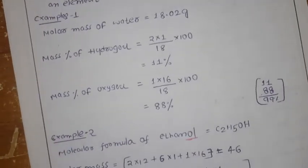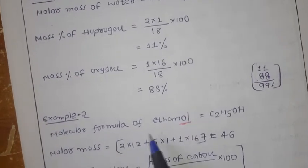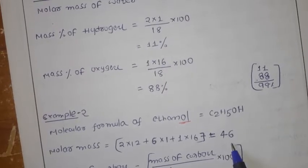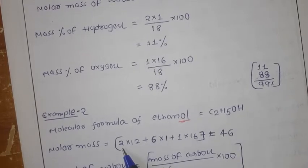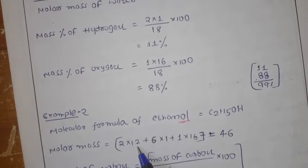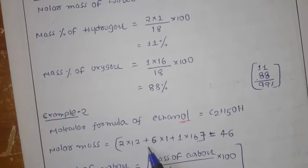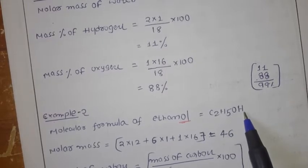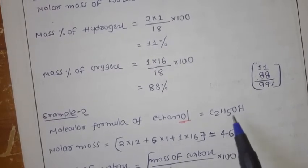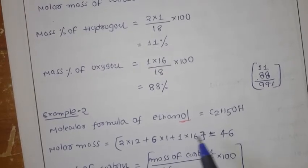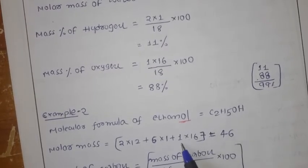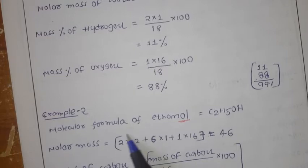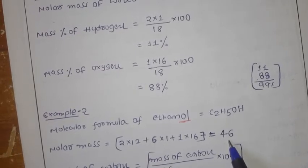Now let us see example 2. The molecular mass of ethanol — the formula for ethanol is C₂H₅OH. The molecular mass is 46. Here we have 2 carbons, and the atomic mass of carbon is 12, so 2 × 12 = 24. The total number of hydrogens is 6 (5 from C₂H₅ and 1 from OH), and the atomic mass of hydrogen is 1, so 6 × 1 = 6. There is 1 oxygen with atomic mass 16. Adding all together: 24 + 6 + 16 = 46.